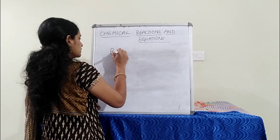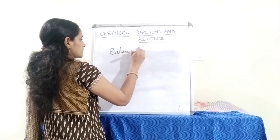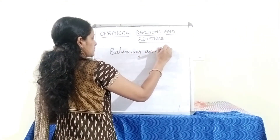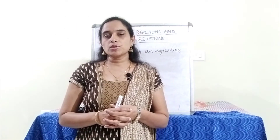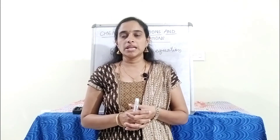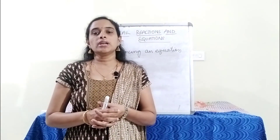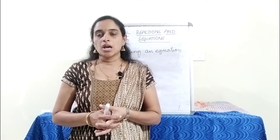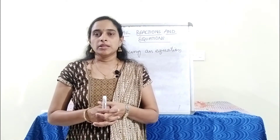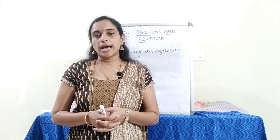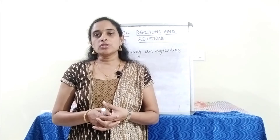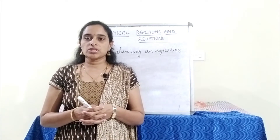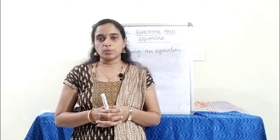We will learn how to balance an equation. A balanced equation is one in which the atoms of various elements on both sides are equal, in accordance with the law of conservation of mass. The law of conservation of mass states that the mass of a substance or atom remains constant before and after the reaction. The process of making atoms equal on both sides is called balancing of a chemical equation.